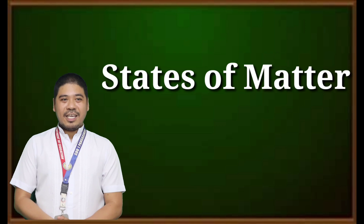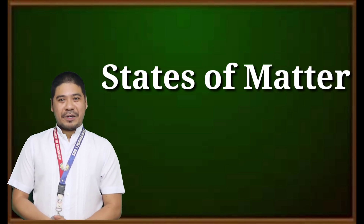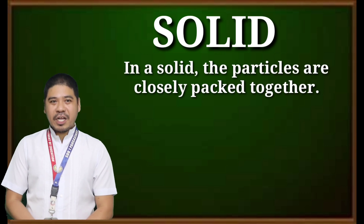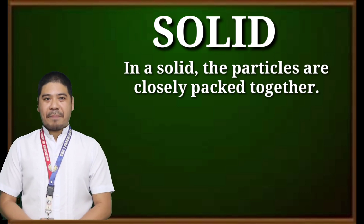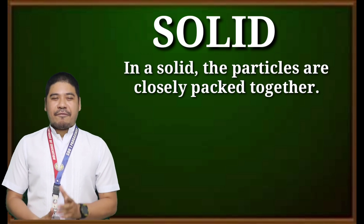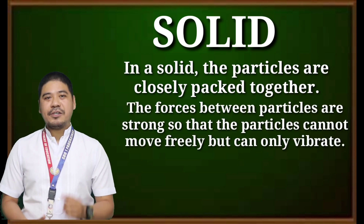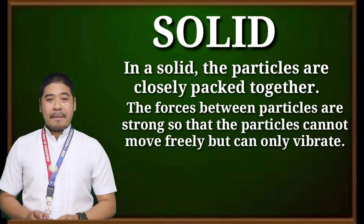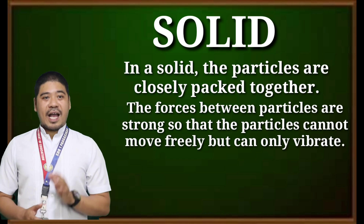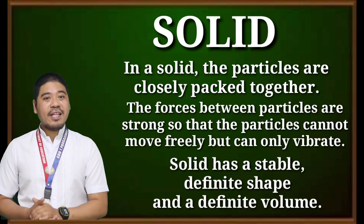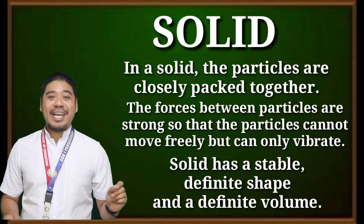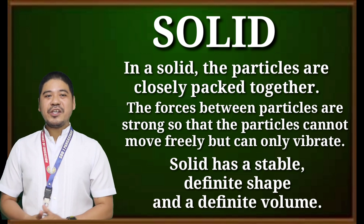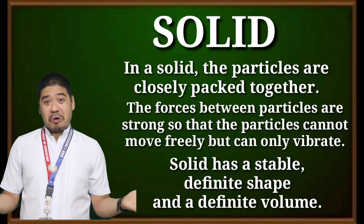Let us study the different states of matter. Let's start with solid. In a solid, the particles are closely packed together. Forces between particles are strong so that the particles cannot move freely but can only vibrate. As a result, a solid has a stable, definite shape and a definite volume. Solids can only change their shape by force, as when broken or cut.